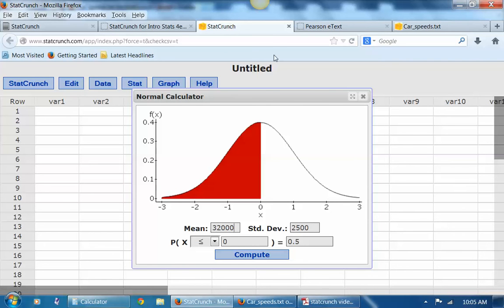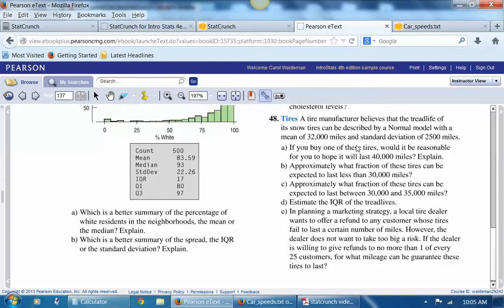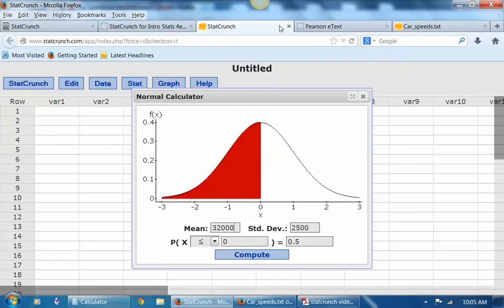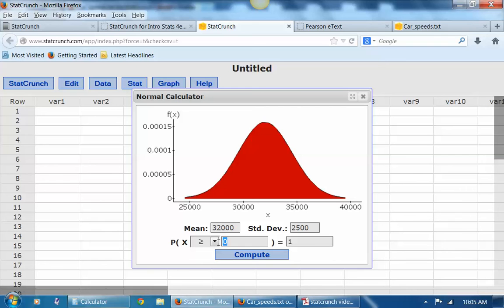Okay, so we're all set now to answer questions. Let's go back to the text and see what they ask us. If you buy one, would it be reasonable for you to hope it will last 40,000 miles? Okay, so let's go back to our tool here. So that would mean, what's the probability it's above, greater than 40,000 miles?